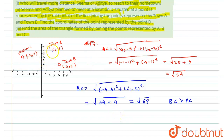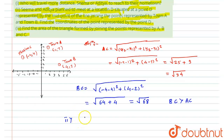Since BC is greater than AC, Aditya travels more distance than Seema. Here, AC is the distance traveled by Seema and BC is the distance traveled by Aditya. Hence, Aditya travels more distance than Seema. Now let's move to the second question, which asks us to find the coordinates of point D, situated at the midpoint of Town A and Town B.